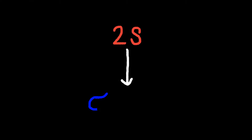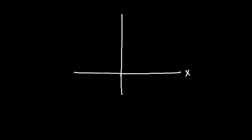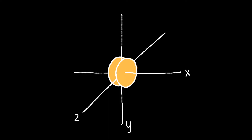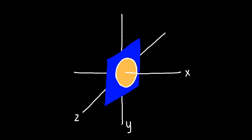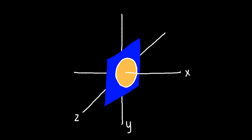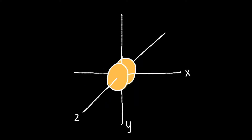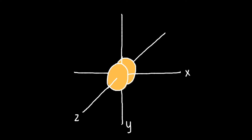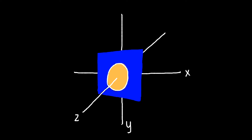What about molecular orbitals of the second energy level? 2S orbitals behave similarly to the 1S orbitals we just saw. However, now we have the introduction of p-orbitals. P-orbitals can be configured in three different ways: X, Y, and Z. Each configuration has a nodal plane.